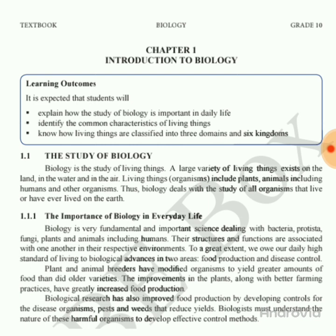Plant and animal breeders have modified organisms to yield greater amounts of food than older varieties. These modified plants and animals have improved food production significantly, including improved growth in livestock such as chickens.